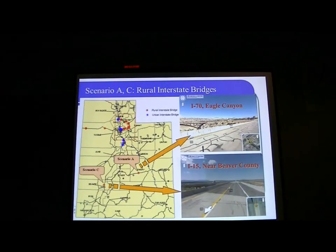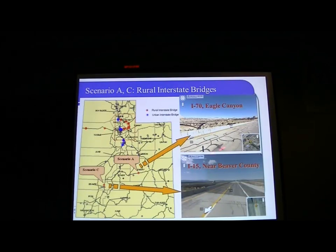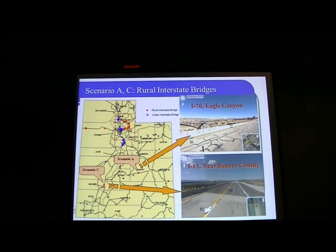This one is in rural area scenario A and C. This is the bridge in Ega Canyon on I-70. You can see in the picture — there's a crack already visible. Imagine if something happens here in this area, the consequences would be very severe. The other scenario we show is on I-15, in a very rural area.